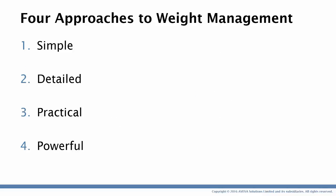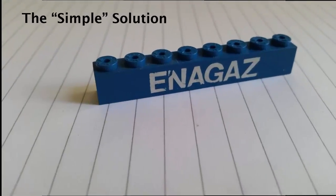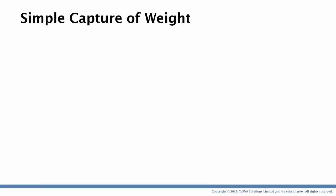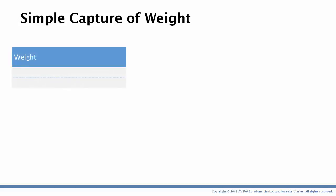What we're going to do with this presentation is set up four different approaches to weight management. We're going to build to a much more powerful concept, but I want to start with something really simple. A simple solution is going to be a building block for our other examples. We're going to build a very simple spreadsheet to capture weight — each row in our spreadsheet will be a weight item, represented as an element with a number of attributes: the weight, the three components of the centre of gravity, and a text description.